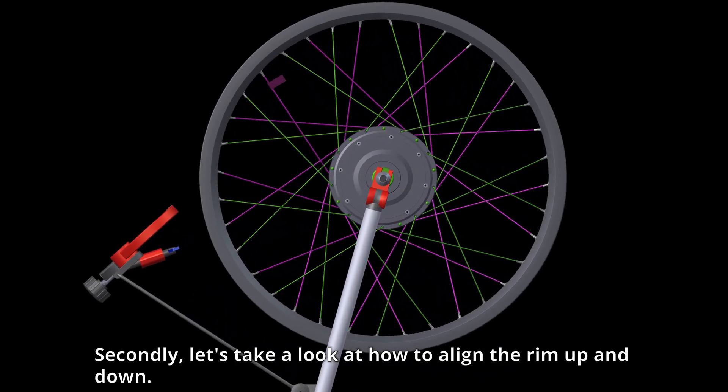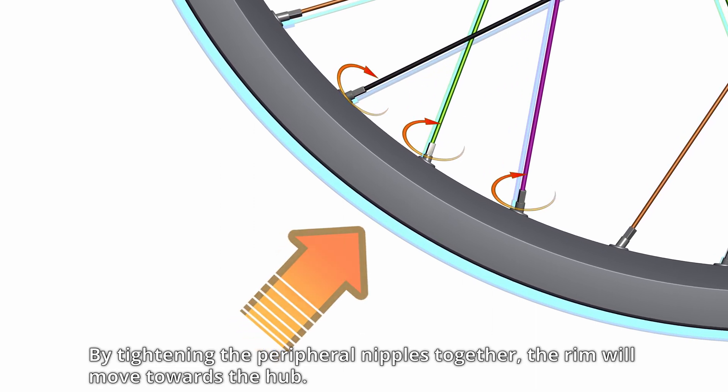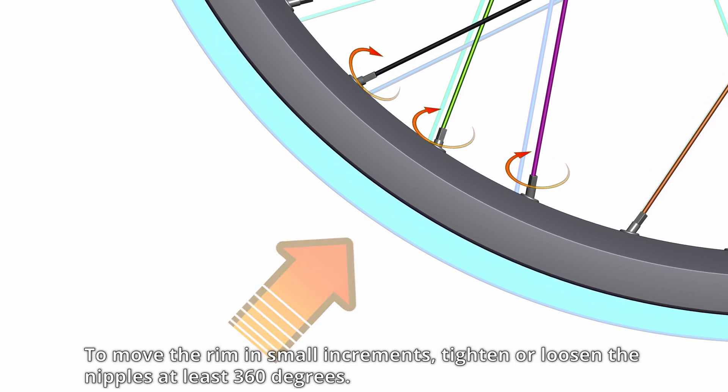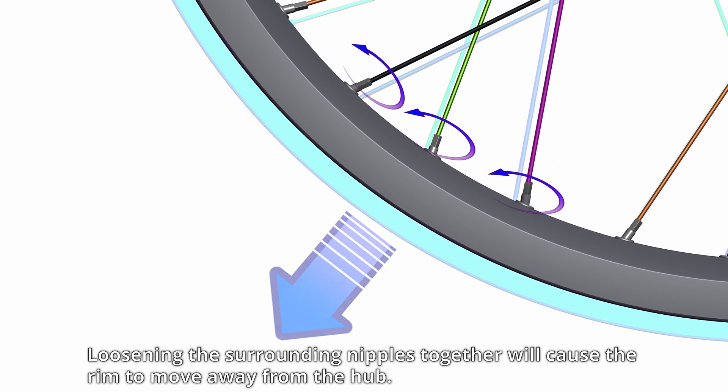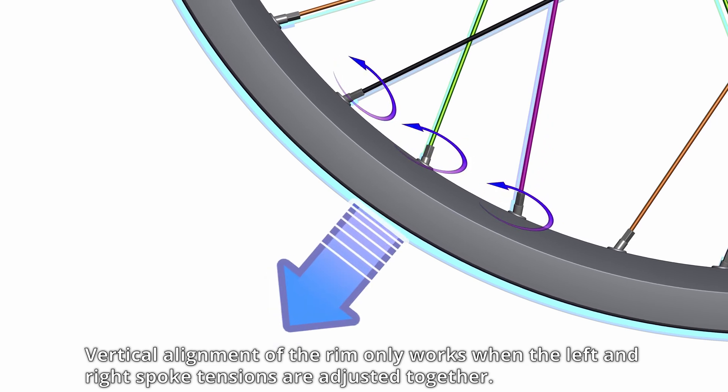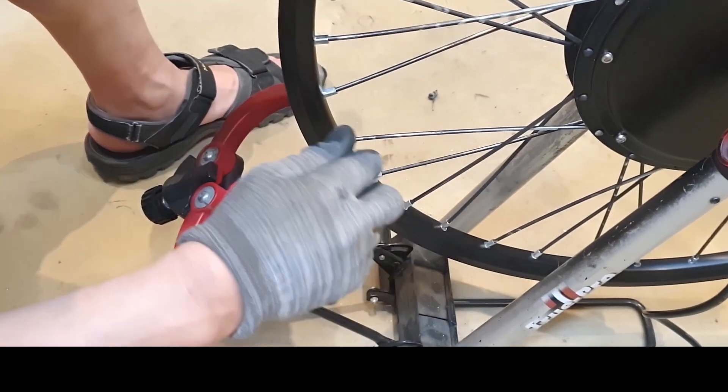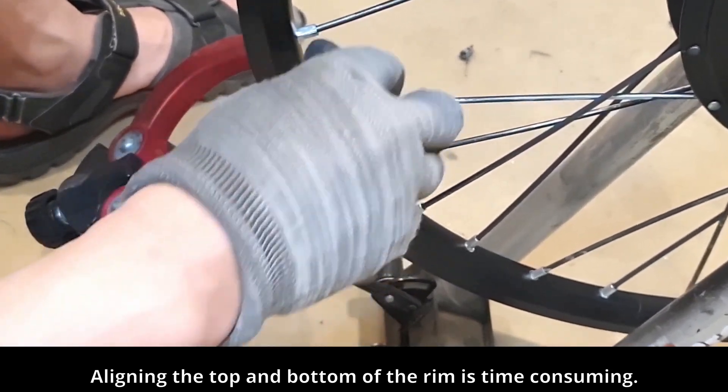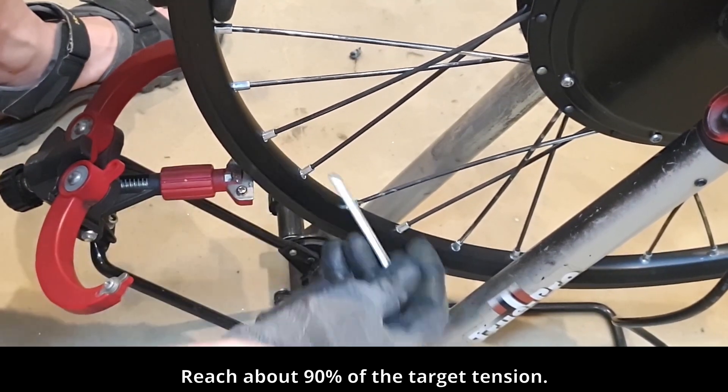Secondly, let's take a look at how to align the rim up and down. By tightening the peripheral nipples together, the rim will move towards the hub. To move the rim in small increments, tighten or loosen the nipples at least 360 degrees. Loosening the surrounding nipples together will cause the rim to move away from the hub. Vertical alignment of the rim only works when the left and right spoke tensions are adjusted together. Aligning the top and bottom of the rim is time consuming. Reach about 90% of the target tension.